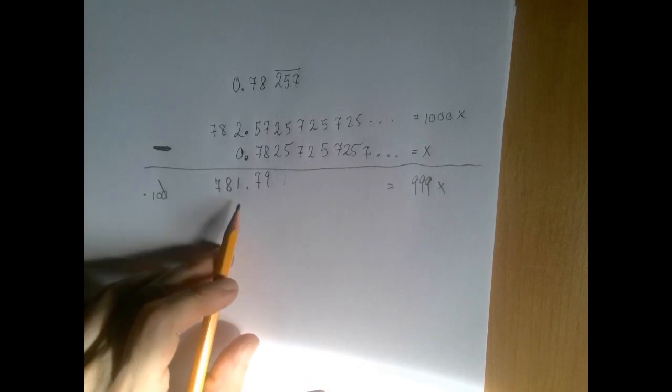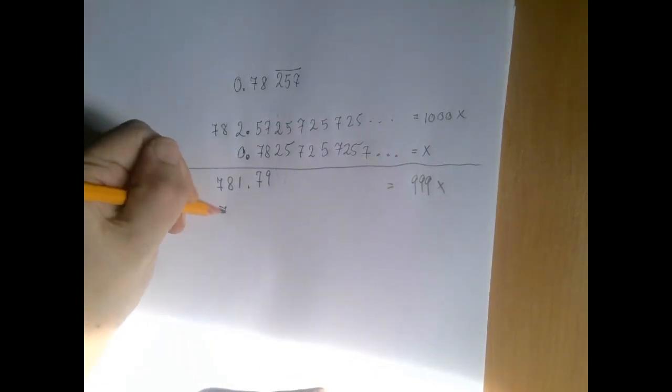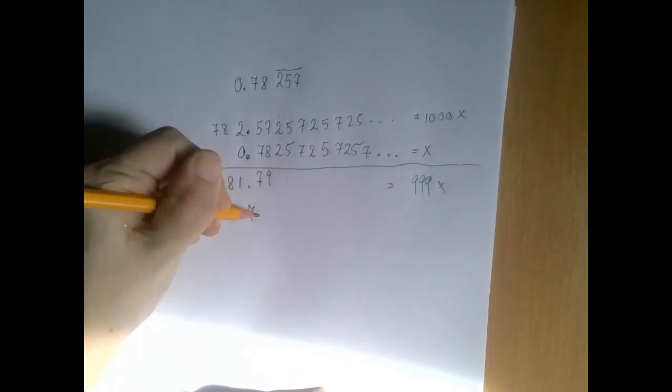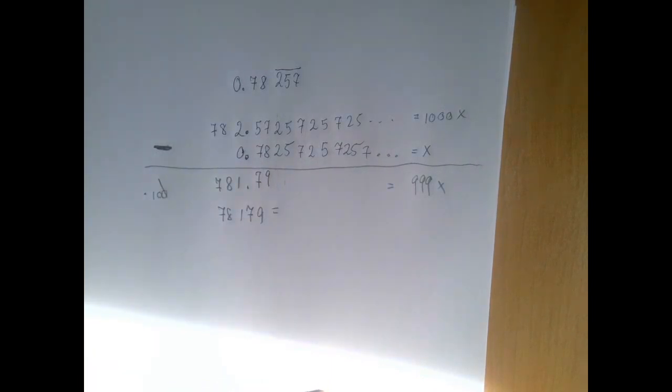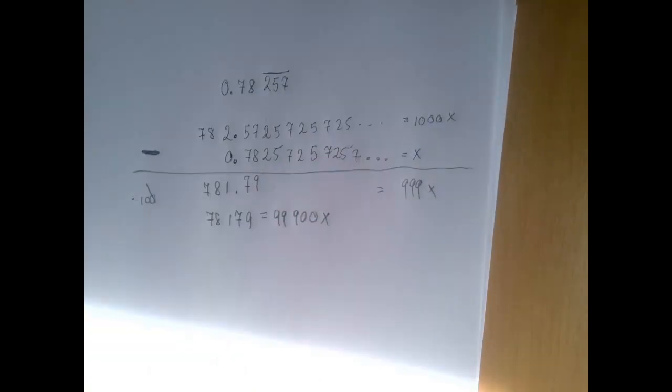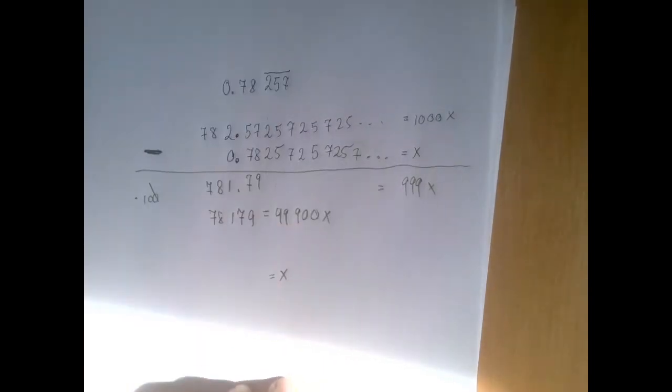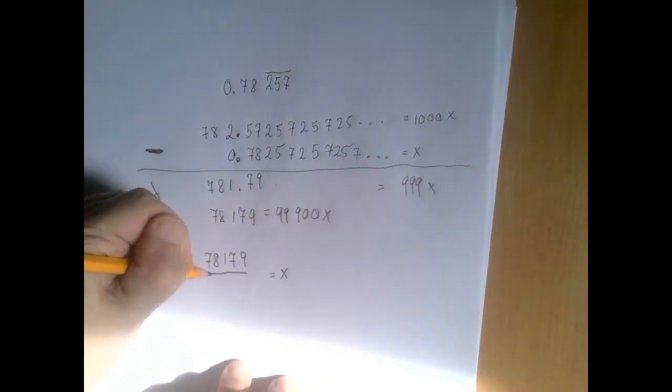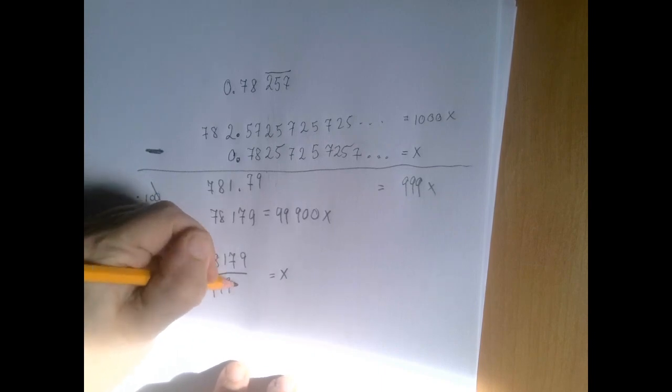So if we multiply the left-hand side by 100, we have 78,179. Now it's an integer. And the price to pay for that is that we have to multiply the other side by 100 as well. So that's going to be 99,900. And now solve for x. x is 78,179 divided by 99,900.